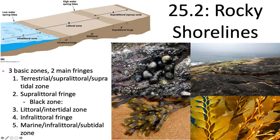Let's talk about stratification in rocky shorelines versus sandy and muddy shorelines. In rocky shorelines you get three basic zones and two main fringes at the borders between those zones. You have the terrestrial or supralitoral or supratidal zone at the top — the area that gets spray from the ocean so it's slightly saline, but is never really submerged.